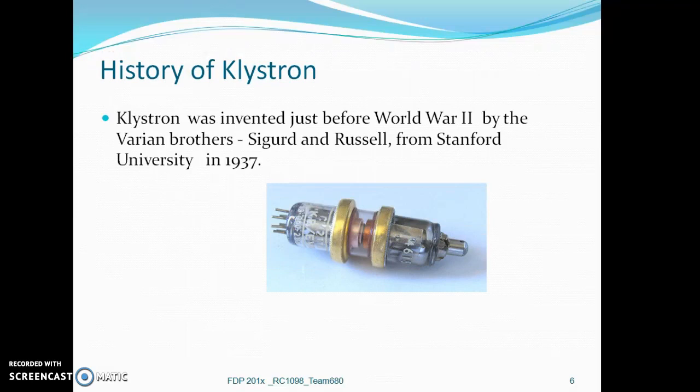Klystron was invented just before World War II by the Varian brothers Sigurd and Russell from Stanford University in 1937.